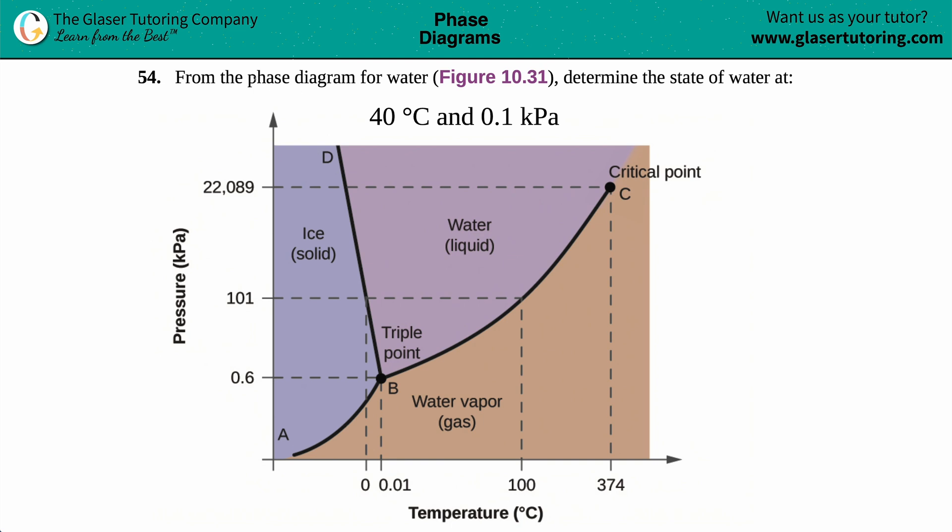Number 54. From the phase diagram for water, figure 10.31, determine the state of water at 40 degrees Celsius and 0.1 kilopascals.